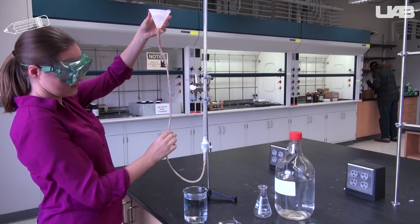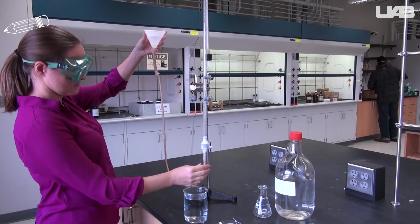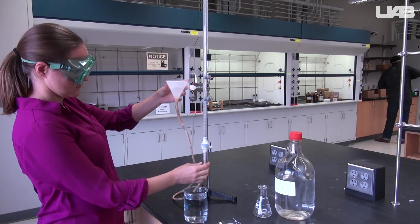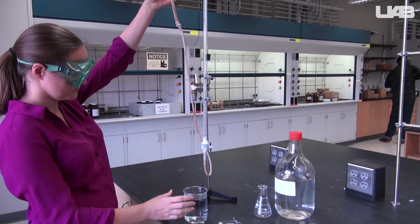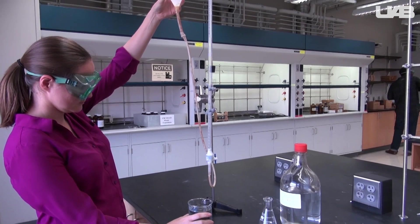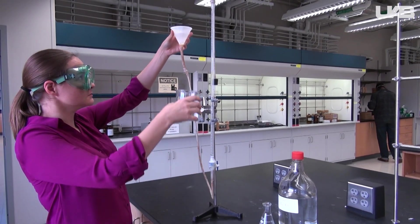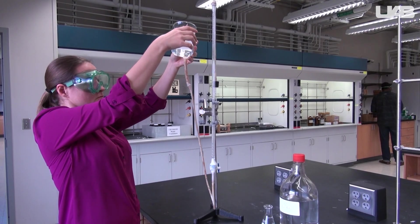If it's going very slow, you can squeeze the tubing to push some of the water through faster. Fill the burette as close to the top as you can. It will be hard to set the meniscus on zero, so just make sure that the level is close but not past the zero mark.